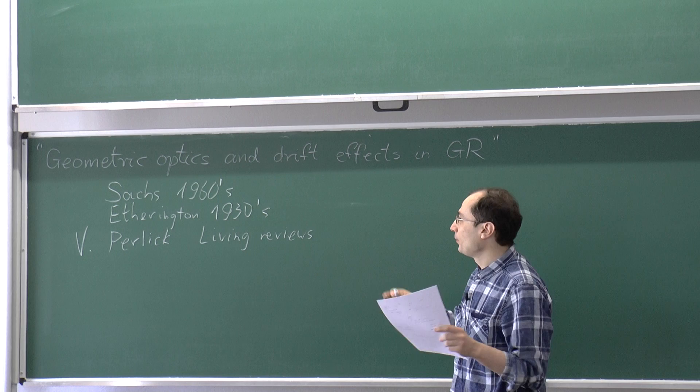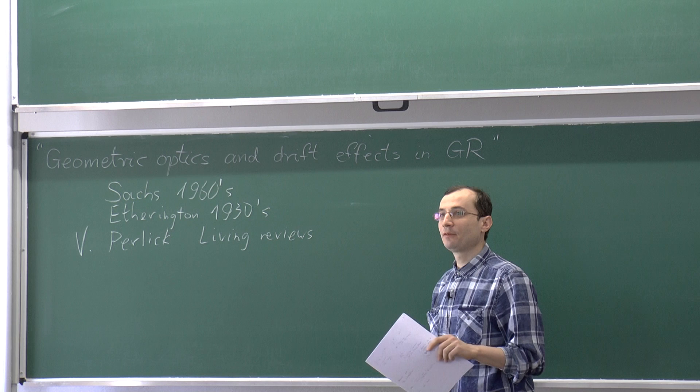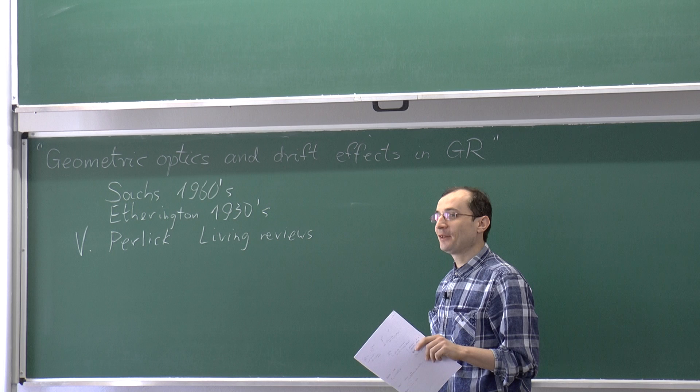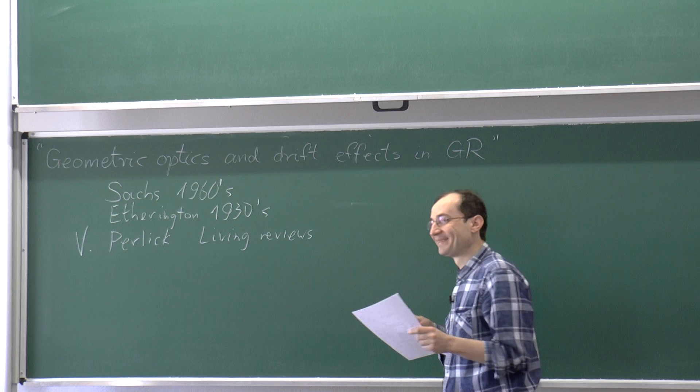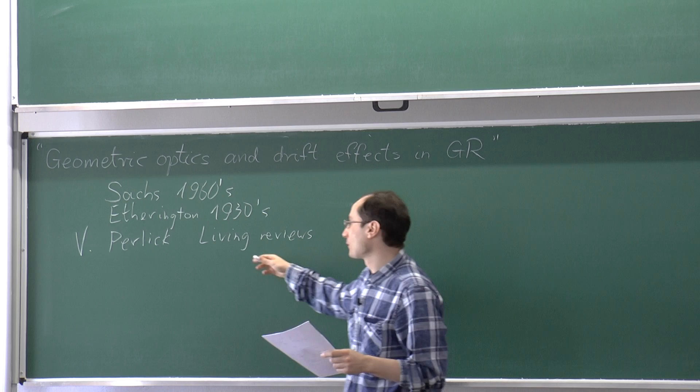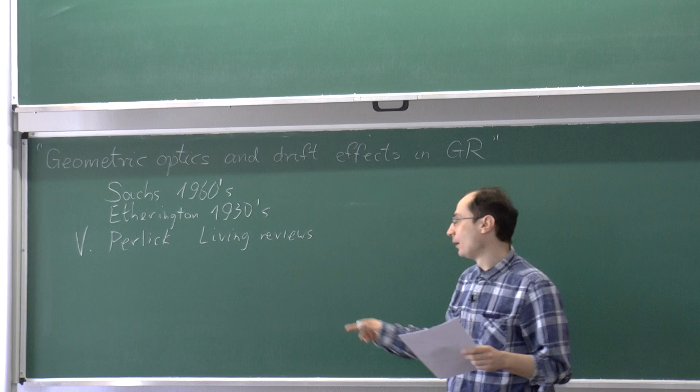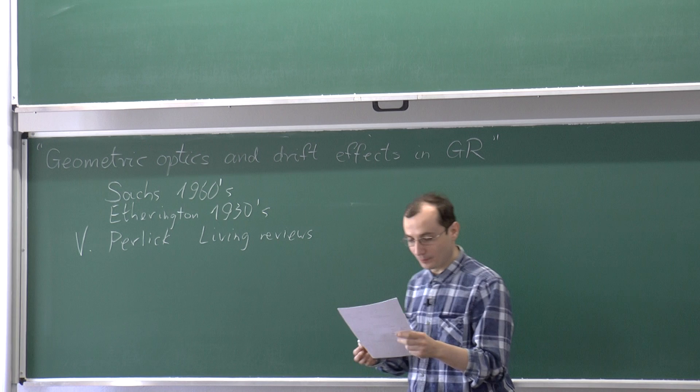Living Reviews is a very interesting journal consisting of reviews on general relativity topics which are updated year by year, so authors are expected to incorporate the most important recent results. There is a review of geometric optics in GR by Volker Perlick with all possible references, allowing you to trace the history of the topic.